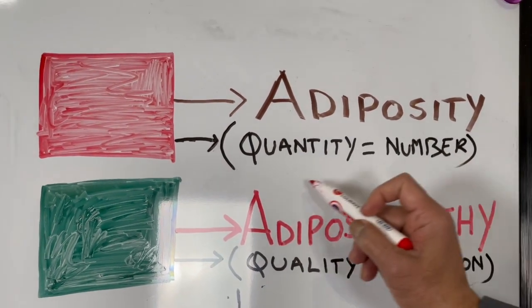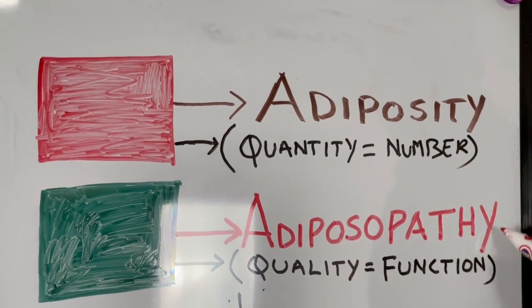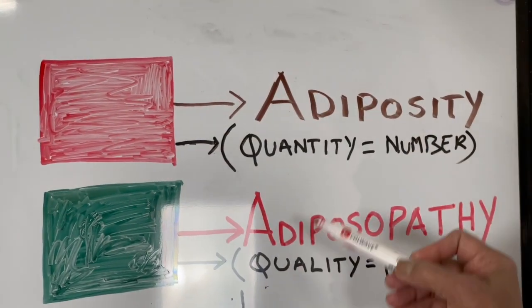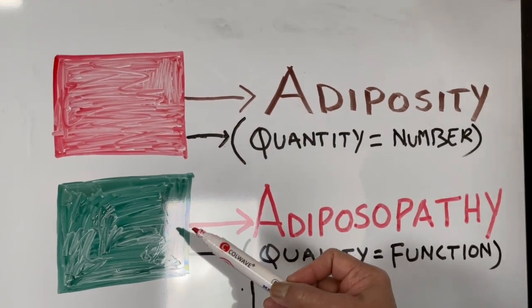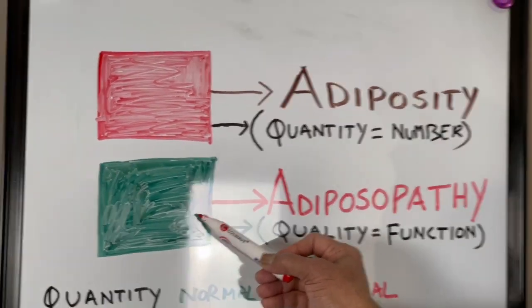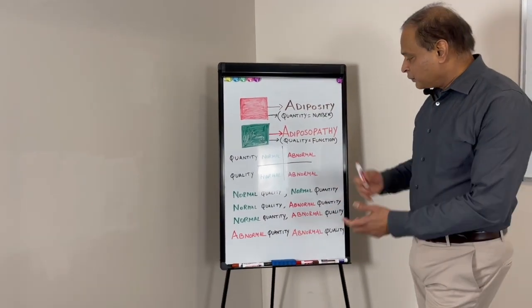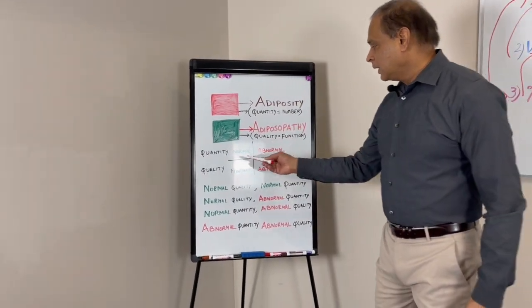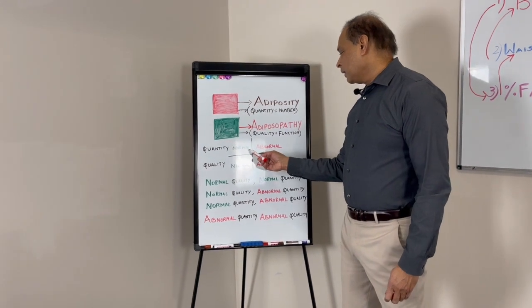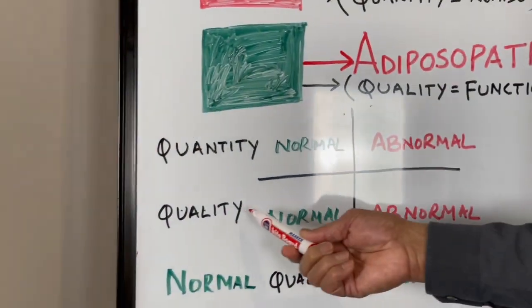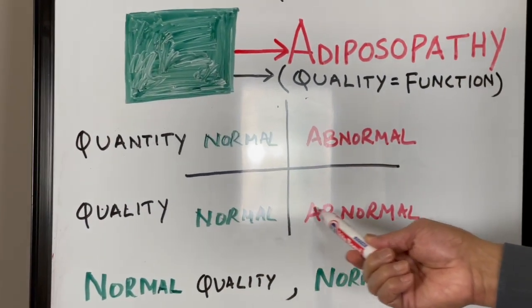It can be a problem with quantity, which is the number we talked about in all our measurement methods, or it could be the quality which we haven't discussed. Generally, quantity can be normal or abnormal, and quality can be normal or abnormal—we can get various combinations.